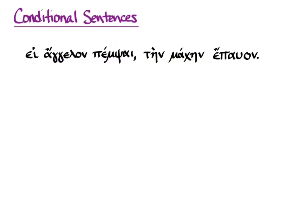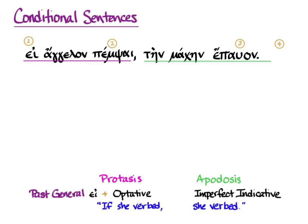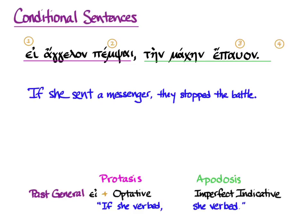Let's continue. εἰ ἄγγελον πέμψαι, τὴν μάχην ἔπαυον. Here we have our two clauses. The 'if' is εἰ, the verb of the protasis is optative, the verb of the apodosis is ἔπαυον — that's imperfect indicative — and we don't have an ἄν. So our pattern is Past General: 'if she verbed, she verbed.' We translate: 'if she sent a messenger, they stop the battle.' We don't know if she did or not, but we know for sure that if she did, they definitely stopped the battle.